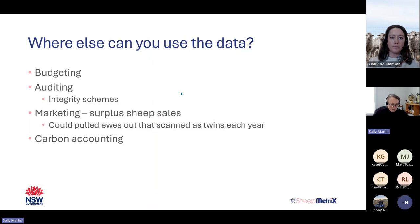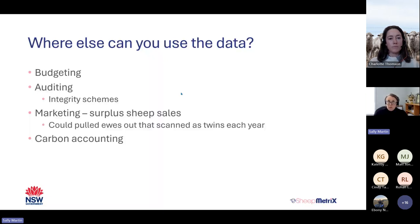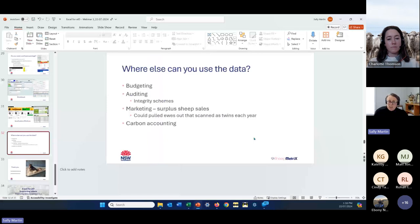Think about where else you might use this data — budgeting, integrity scheme auditing, or surplus sheep sales. You could split ewes by whether they were scanned as twins, or sell them with that additional performance data. There may also be opportunities with carbon accounting, particularly around growth rates, where this data could become increasingly valuable.